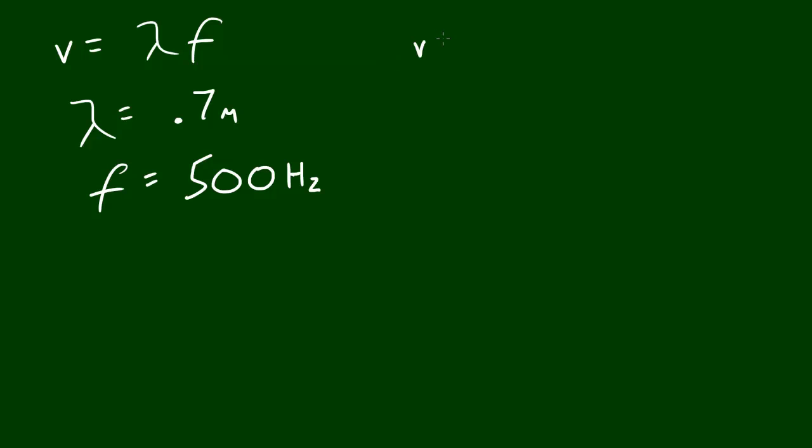Well, velocity is equal to the wavelength, which is 0.7 meters, multiplied by 500 Hertz. And remember, you don't have to write meters or seconds, because that's what Hertz means.